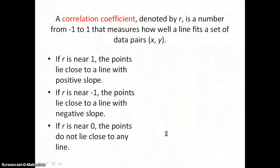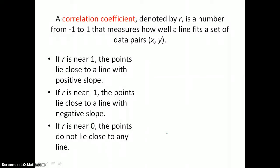A correlation coefficient, denoted by r, is a number from negative 1 to 1 that measures how well a line fits a set of data pairs (x, y). If r is near 1, the points lie close to a line with positive slope.